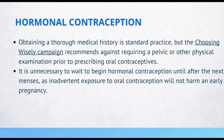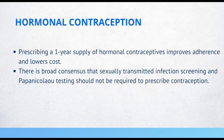It is unnecessary to wait to begin hormonal contraception until after the next menses, as inadvertent exposure to oral contraception will not harm an early pregnancy. Prescribing a one-year supply of hormonal contraceptives improves adherence and lowers costs. There is broad consensus that STI screening and pap smears should not be required to prescribe contraception.